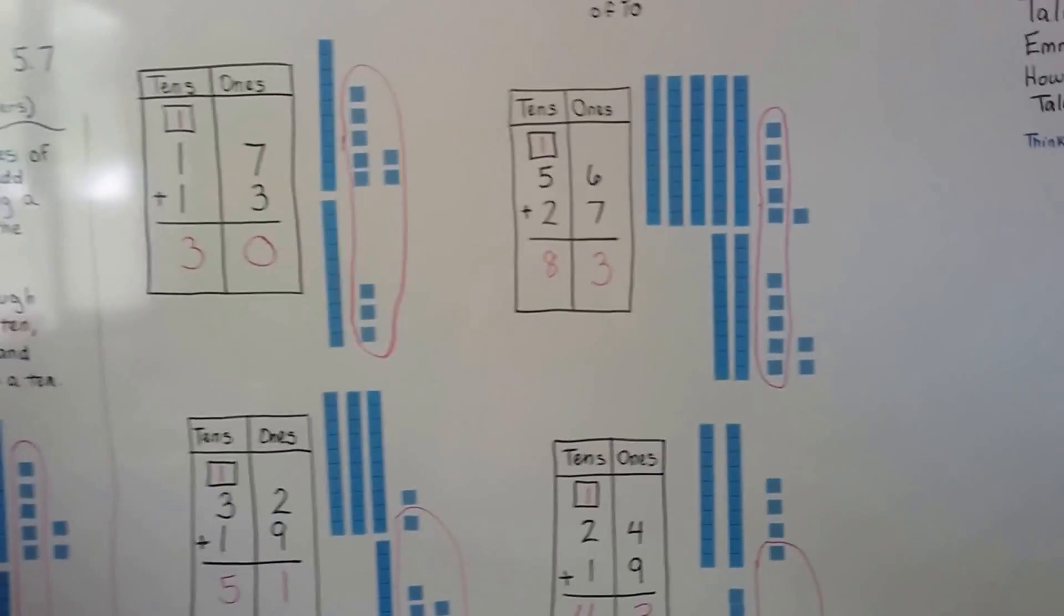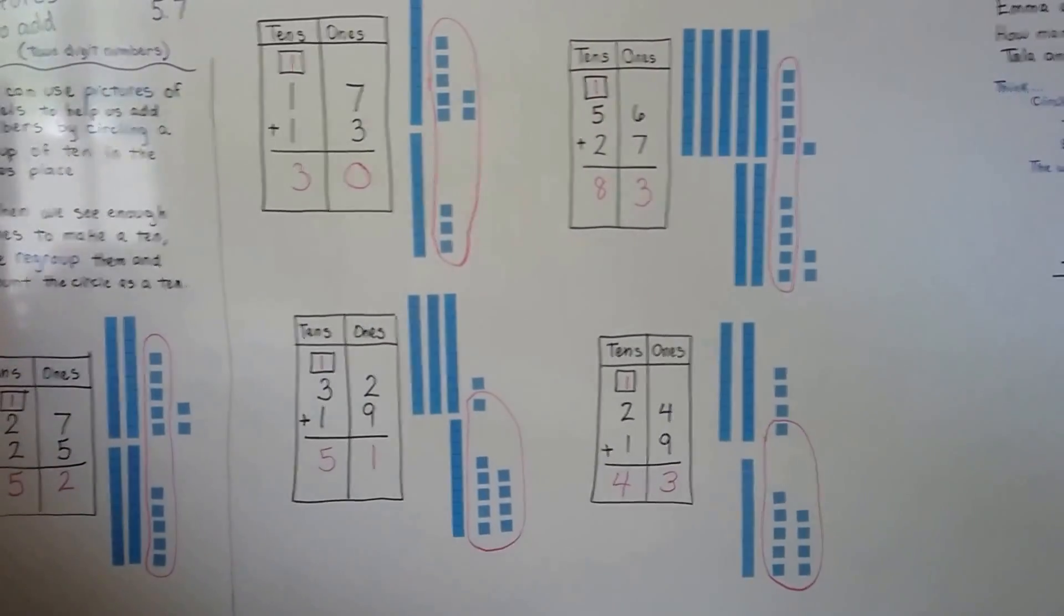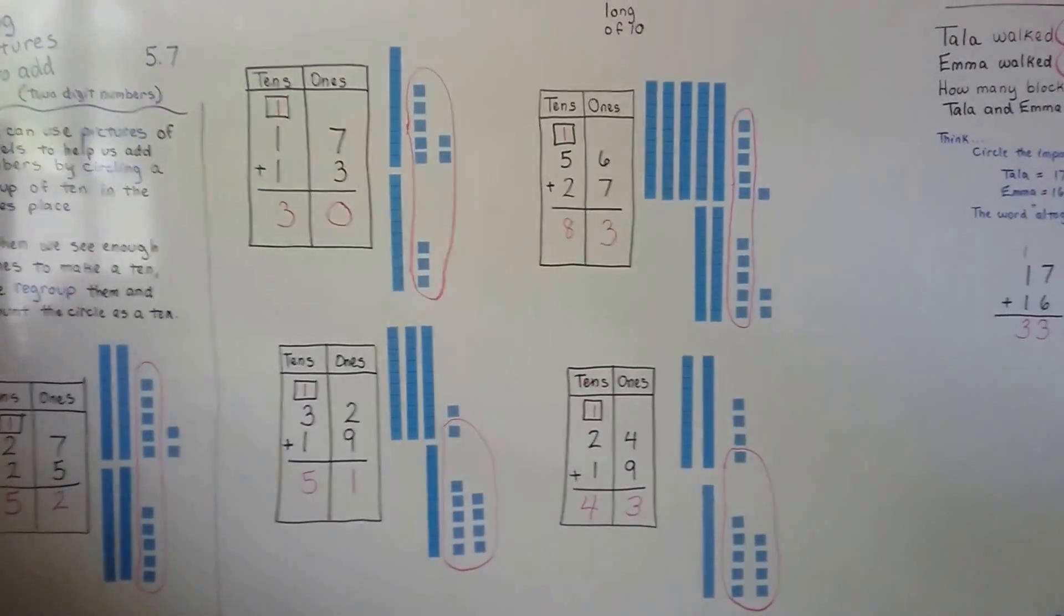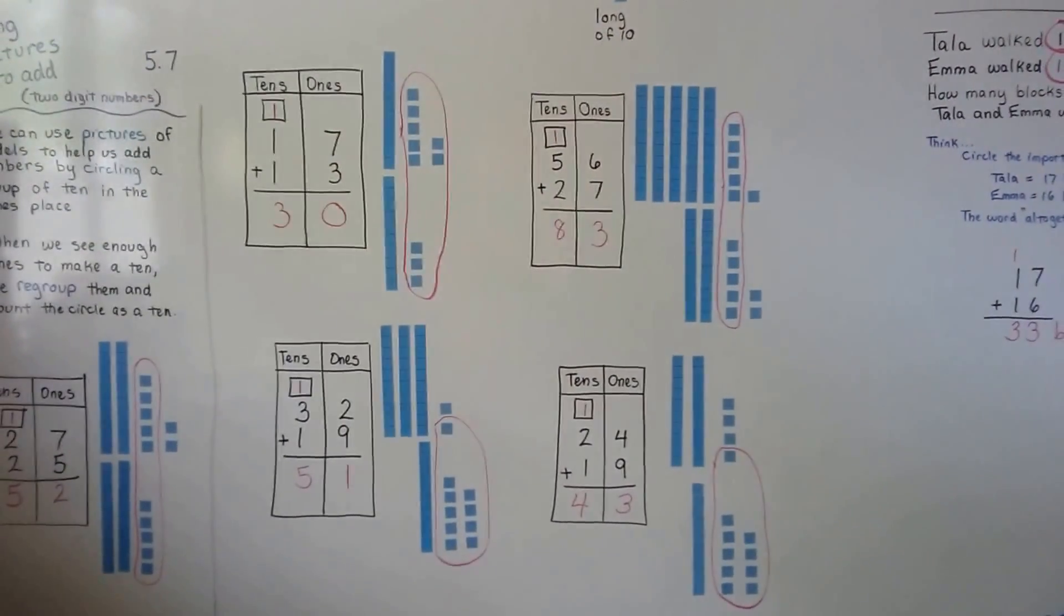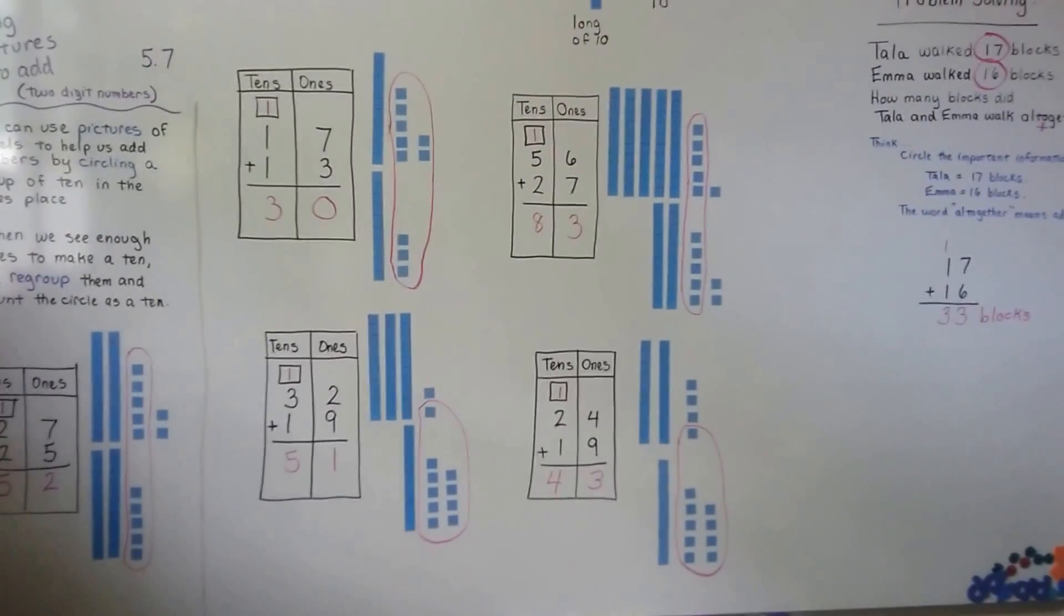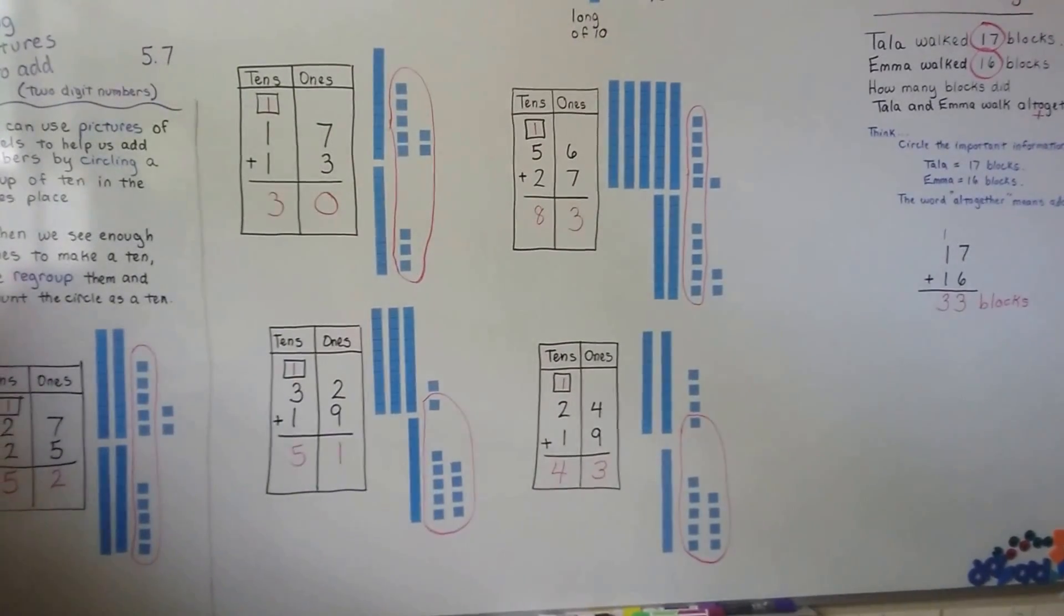So you can use pictures to help you add. And you can regroup your ones to be a new 10 and add it to the tens place. We're going to continue on talking about two digit numbers and addition. And I'll see you next video. Bye.